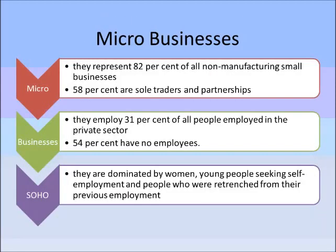Briefly talking about micro businesses or the SOHO business: they now represent 82% of all non-manufacturing small businesses in Australia, and 58% of these are sole traders and/or partnerships. The reason why non-manufacturing is mentioned here is that setting up a manufacturing business is not really viable on a small scale — the cost of machinery, the cost of the plant and the factories needed tend not to make it worthwhile. They tend to be much larger scale.